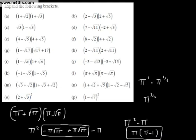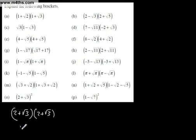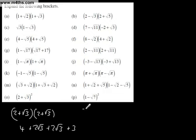For (2 + √3)², we just double-expand: (2 + √3)(2 + √3). We get 2 times 2 = 4, plus 2√3, plus another 2√3, plus √3 times √3 which is 3. So we'd end up with 4 plus 3 equals 7, plus 4√3, giving 7 + 4√3.